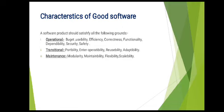In terms of operational characteristics, the points could be: budget, usability, efficiency, correctness, functionality, dependability, security, and safety. These are the points regarding operational characteristics which combine to produce the characteristics of a good software.